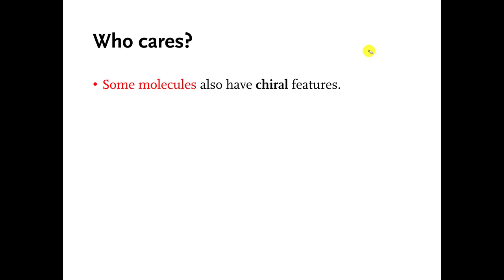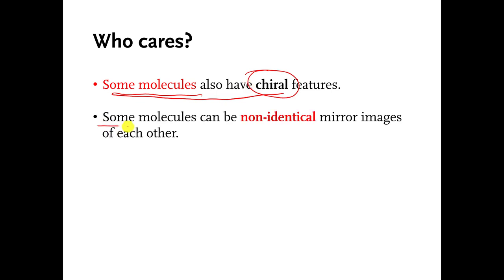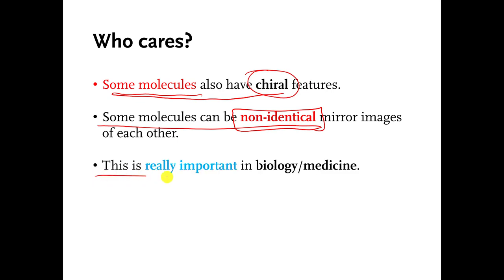In chemistry, what you say is those gloves have a chiral feature. This is a really weird word and it takes a little bit of getting used to. What chiral means is there is something about this glove that makes it a left-handed glove, and there is something about this glove that makes it a right-handed glove — there is something about it that makes it left or right-handed. It turns out that there are a lot of molecules out there that also have chiral features, meaning they come in either a left-handed form or a right-handed form. This is really important in biology and medicine, and I will explain that in the next video.